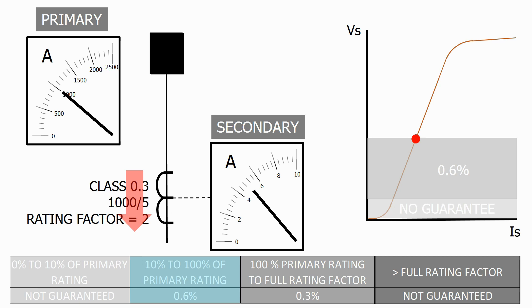Let's now increase the current further beyond the 1000 amp rating. As we can see the rating factor for this current transformer is 2. Therefore the full rating factor is 2 times by 1000 which is 2000 amps.